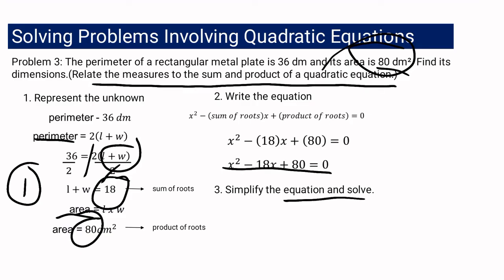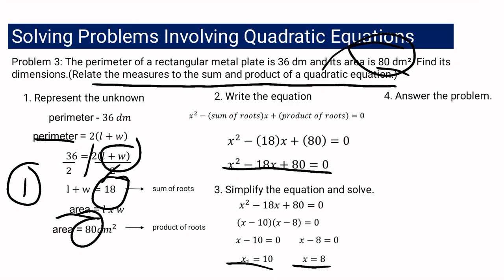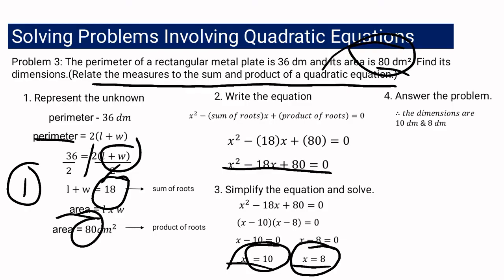Solving x squared minus 18x plus 80 equals 0 by factoring gives (x minus 10)(x minus 8) equals 0, because negative 10 times negative 8 is positive 80 and negative 10 plus negative 8 is negative 18. Equating each factor to zero: x sub 1 is 10 and x sub 2 is 8. These are the dimensions of the rectangle — 10 decimeters and 8 decimeters.